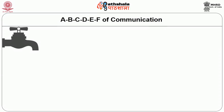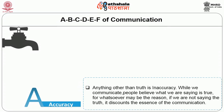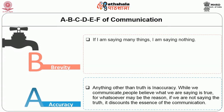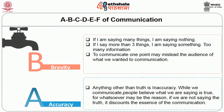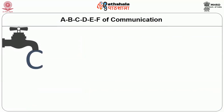A, B, C, D, E, F of communication. Accuracy — anything other than truth is inaccuracy. While we communicate, people believe what we are saying is true. If we are not saying the truth, it discounts the essence of the communication. Brevity — if I am saying too many things, I am saying nothing. If I say more than three things, I may mislead the audience about what I wanted to communicate. A communicator who is brief always grabs the attention of the listeners.